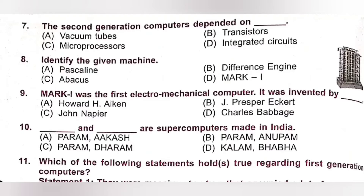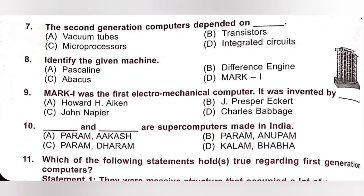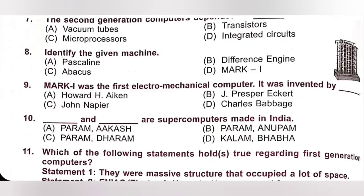Question 10: Dash and dash are supercomputers made in India. A. Param Akash, B. Param Anupam, C. Param Dharam, D. Kalam Baba. Param and Anupam are supercomputers made in India. Option B is the correct answer.